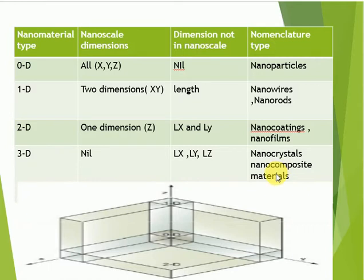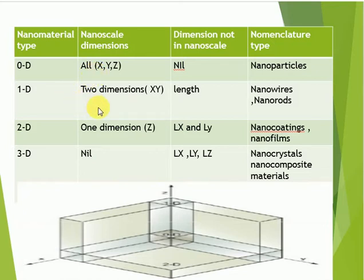To compare: in zero dimensional, all dimensions are measured within nano scale. In one dimensional, two out of three dimensions are measured within nano scale. In two dimensional, only one dimension is measured within nano scale. In three dimensional, all three dimensions are outside the nano scale.